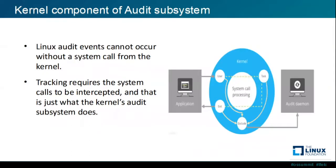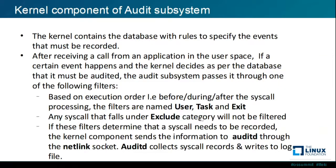There is another filter called the exclude filter; any system call falling under this category will not be audited. If the filter determines that the system call needs to be recorded, the kernel component of the audit subsystem sends the information to the user space component — particularly the audit daemon process. This information is sent from kernel space to user space with the help of a netlink socket. The audit daemon then collects the system call records and writes them to the log files.